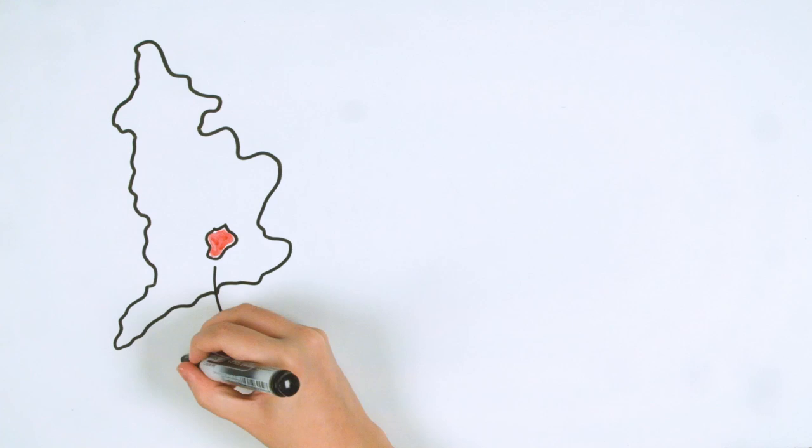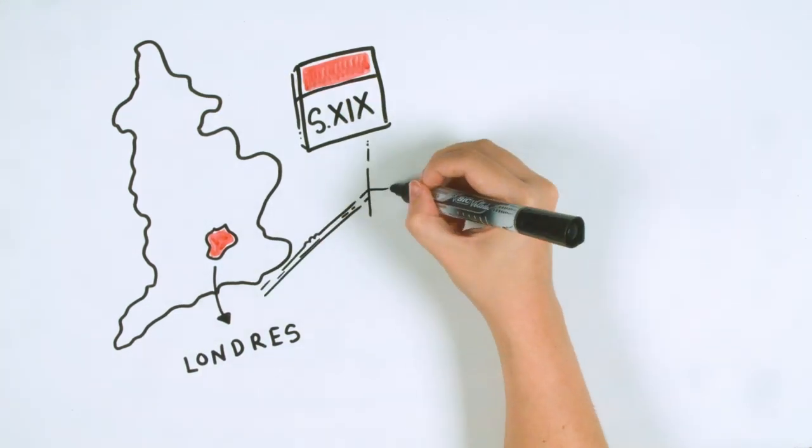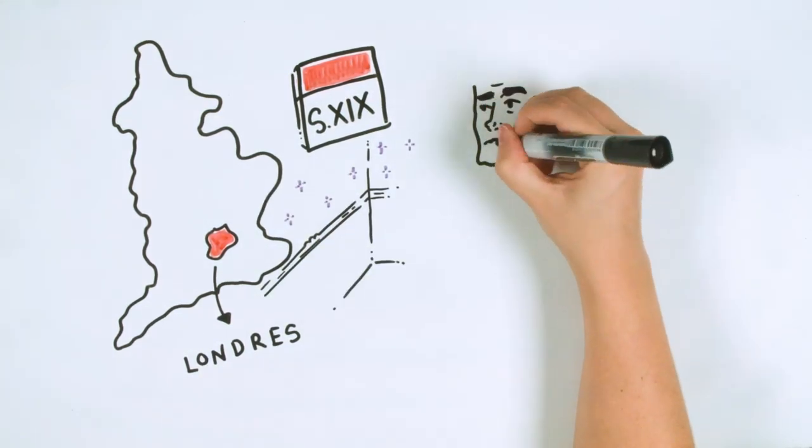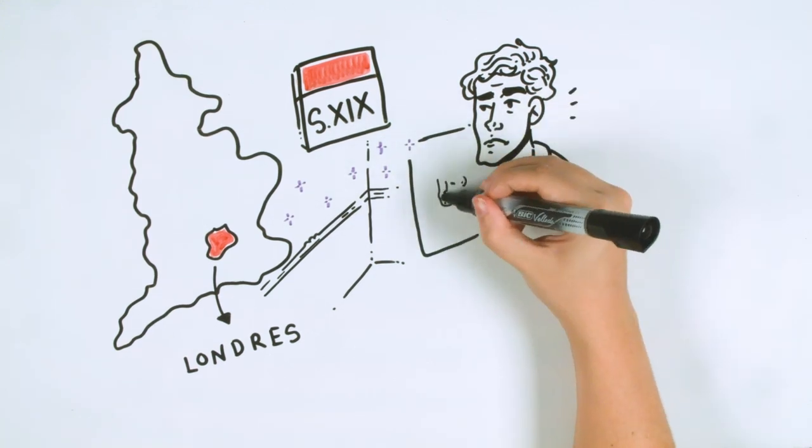The story begins in London in the 19th century. In his studio, the well-known artist Basil Hallward is finishing the portrait of a young man with extraordinary beauty.